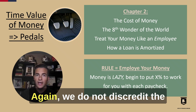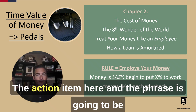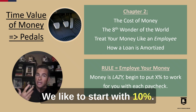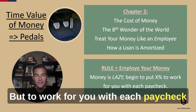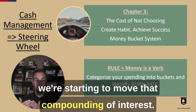The action item here is: money is lazy and you have to put in an X percentage — we like to start with 10%. I made a dollar, I saved a dime — put it to work for you with each paycheck. We're starting to move that compounding of interest, but now we've got to start grabbing that steering wheel and understanding which way we're going.